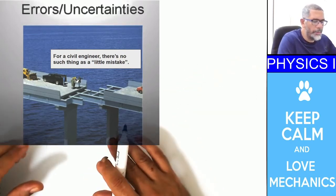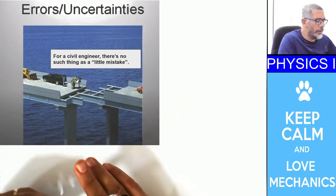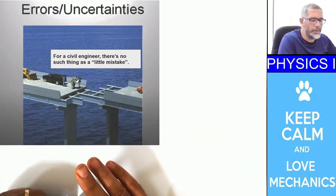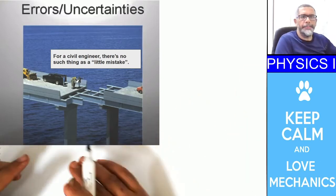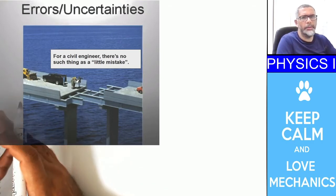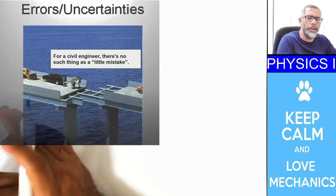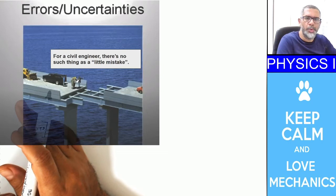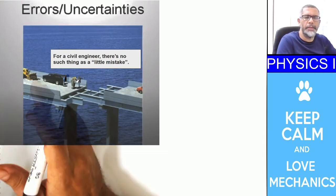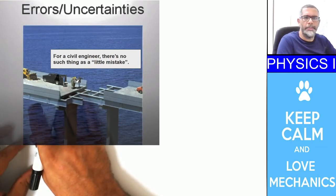Physics starts with measurements. But there is always some mistakes — or errors, or uncertainties — in measurements. They are all the same. There is no physical measurement without error or without uncertainty. It is not possible to find the true value of some physical measurement. There will always be errors because of the nature of the measurement.